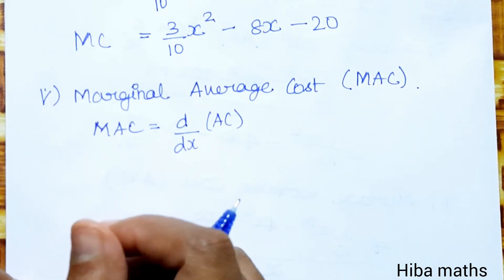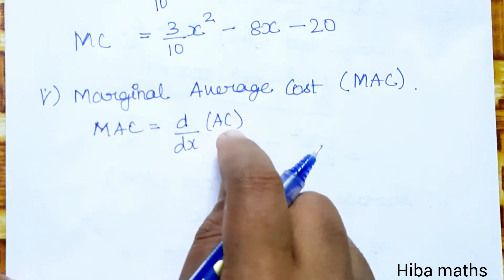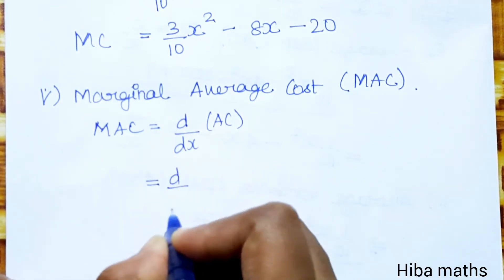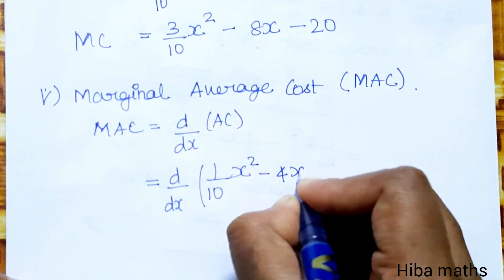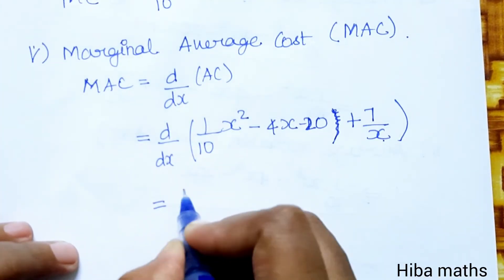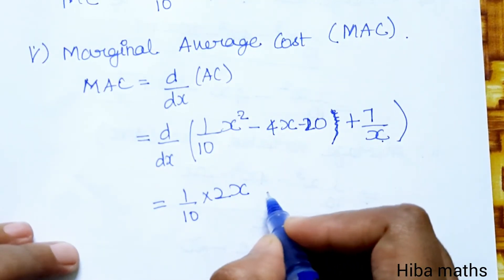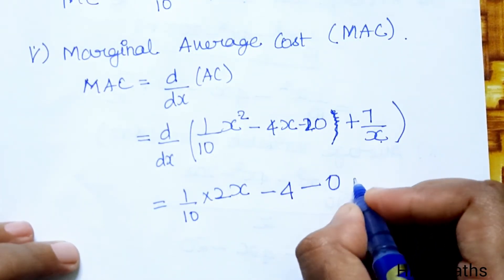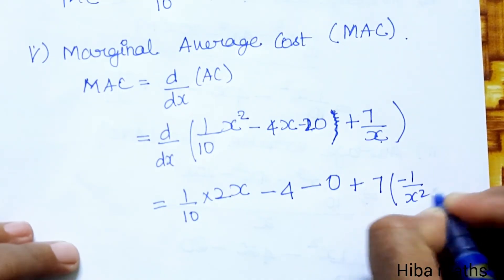Last part: marginal average cost, MAC. In MAC, we differentiate the average cost. d/dx of AC equals d/dx of (1/10 x² minus 4x minus 20 plus 7/x). Differentiating: 1/10 into 2x, x² differentiates to 2x; minus 4x differentiates to 4; minus 20 differentiates to 0; plus 7 times 1/x differentiates to minus 1/x².